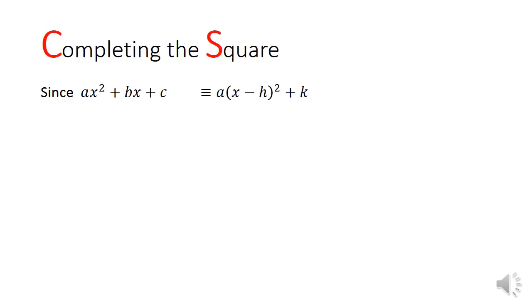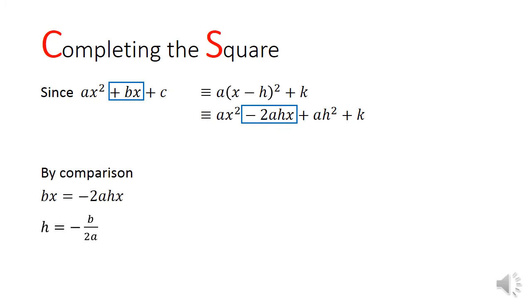Let's look at the derivation. Since the general form is equivalent to the vertex form, we can equate both forms together. After expanding the vertex form, I can compare the x terms, highlighted in blue. Making h the subject, I will get h equals to negative b over 2a.